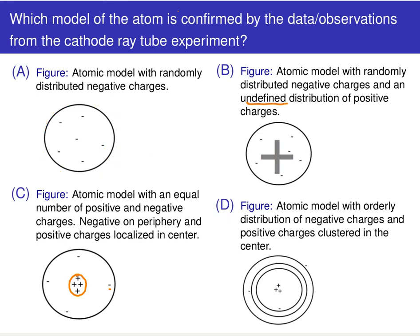Let's think through each one. Choice A: the presence of this beam of electrons — negatively charged particles flying through — obviously tells us that negative charges are present. Having negative charges present is confirmed by J.J. Thomson's experiment.